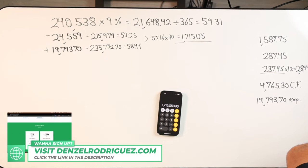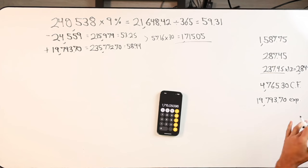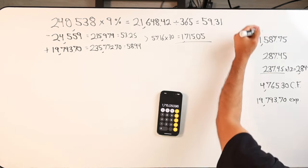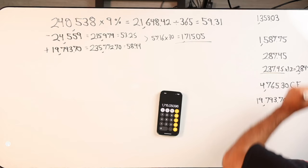Then we come over to the interest we're already paying at the 6.75% is 1,353.03.